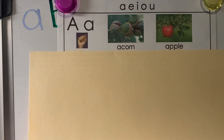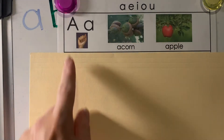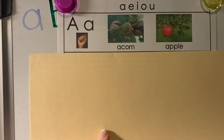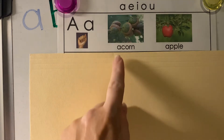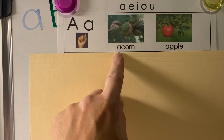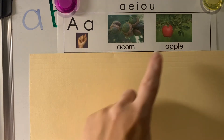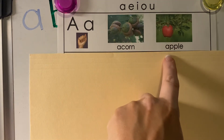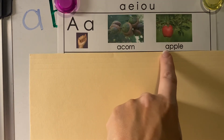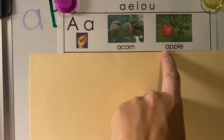Let's look at the first vowel sound. Our first vowel is A. A can say its own name — that's the long sound, A as in acorn. A can also say the short sound, which is A, like apple.